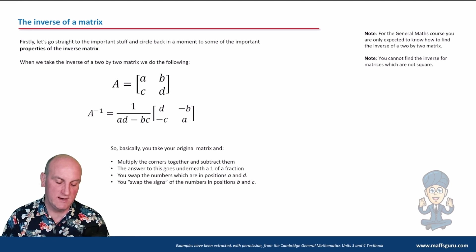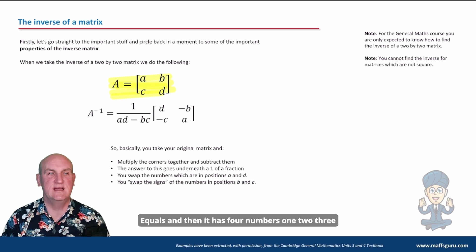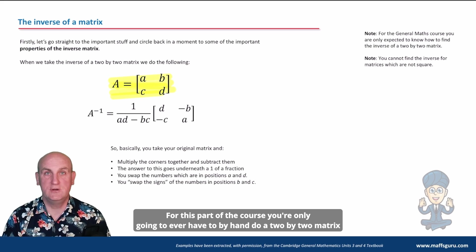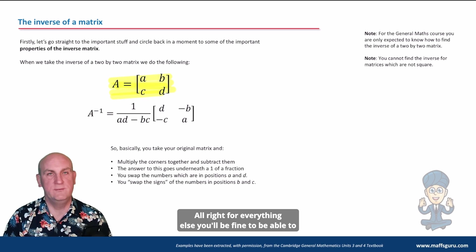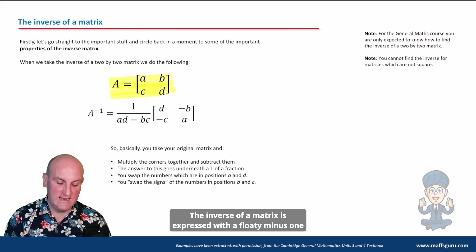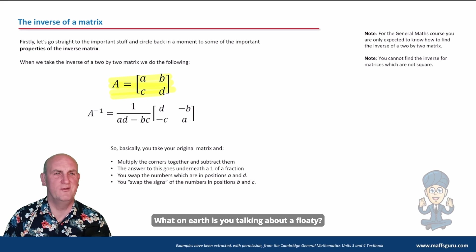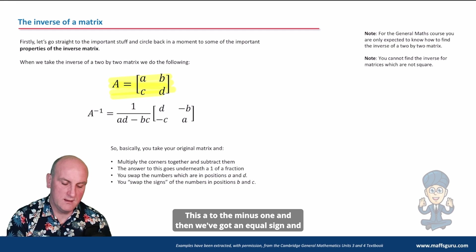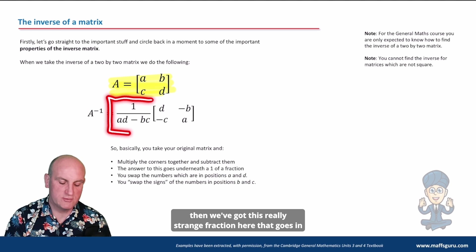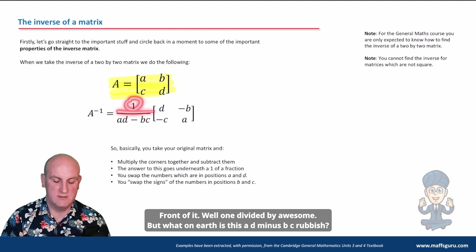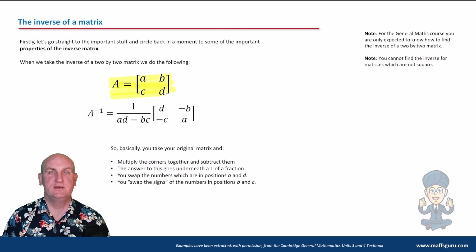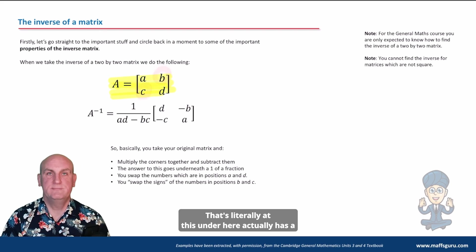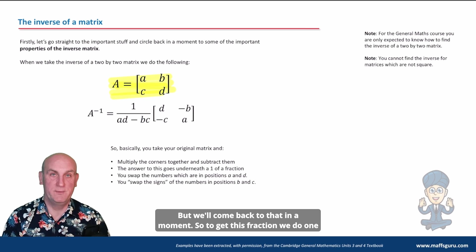We know we can express a matrix A with four numbers — say 1, 2, 3, 4 — assuming a two-by-two matrix. For this part of the course you only ever need to do a two-by-two matrix by hand; for everything else use your calculator. The inverse of a matrix is expressed with a superscript minus one — A to the minus one. That equals one divided by AD minus BC, times a rearranged version of the matrix. That value on the bottom, AD minus BC, is called the determinant.